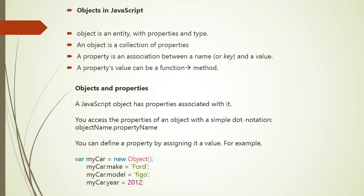Consider what is an object in JavaScript. Objects in JavaScript, like in many other programming languages, can be compared to objects in real life. In JavaScript, an object is a standalone entity with properties and type. For example, a cup is an object with properties: it has a color, a design, a weight, and a material. Similarly, JavaScript objects can have properties which define their characteristics. An object is a collection of properties, where a property is an association between a name (or key) and a value. A property's value can be a function, in which case the property is known as a method.